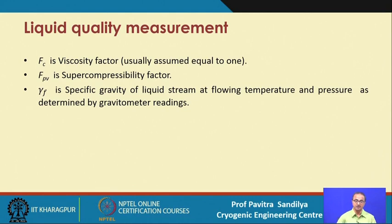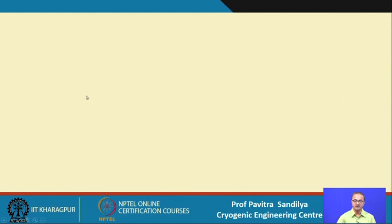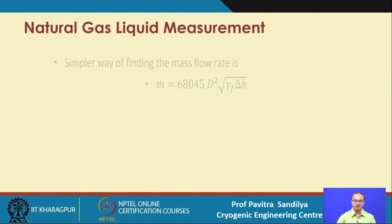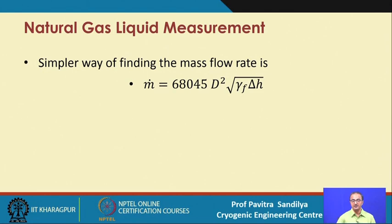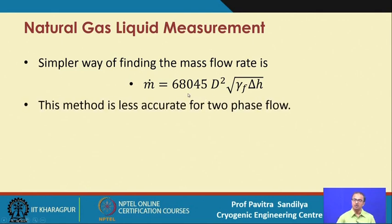Gamma_f is the specific gravity of the liquid stream. There is also a simpler way of finding mass flow rate for natural gas systems, where all expressions have been obtained by fitting experimental data. However, this method is less accurate for two-phase flow — it works well for single phase flow but not for two-phase flow.